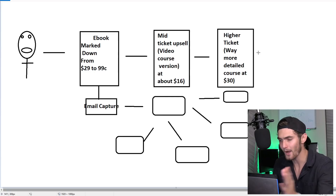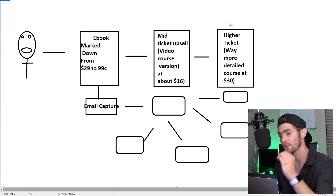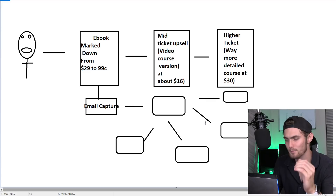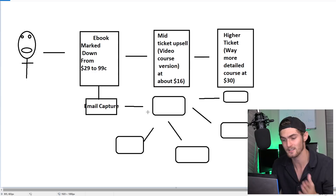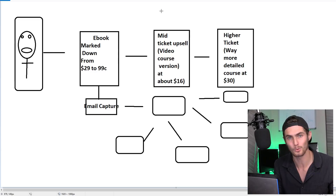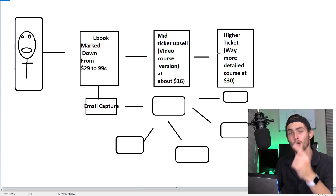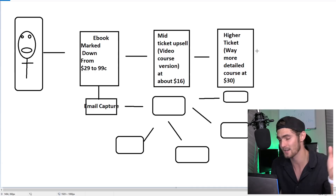Throughout this entire graph there are so many different ways to actually earn from it. With the ebook it's a quick buck, through the mid-ticket upsell video course another $16, the higher ticket offer at $30. And if they don't purchase any of these at the time, we can retarget them with these mid and higher ticket products at amazing 50% irresistible offers in the emails — one-time deal of the day things. The software I'm going to show you is going to automate everything for you. You just put the funnel together — it's literally a drag-and-drop tool. The emails are automatically sent out; this entire system does everything for you.